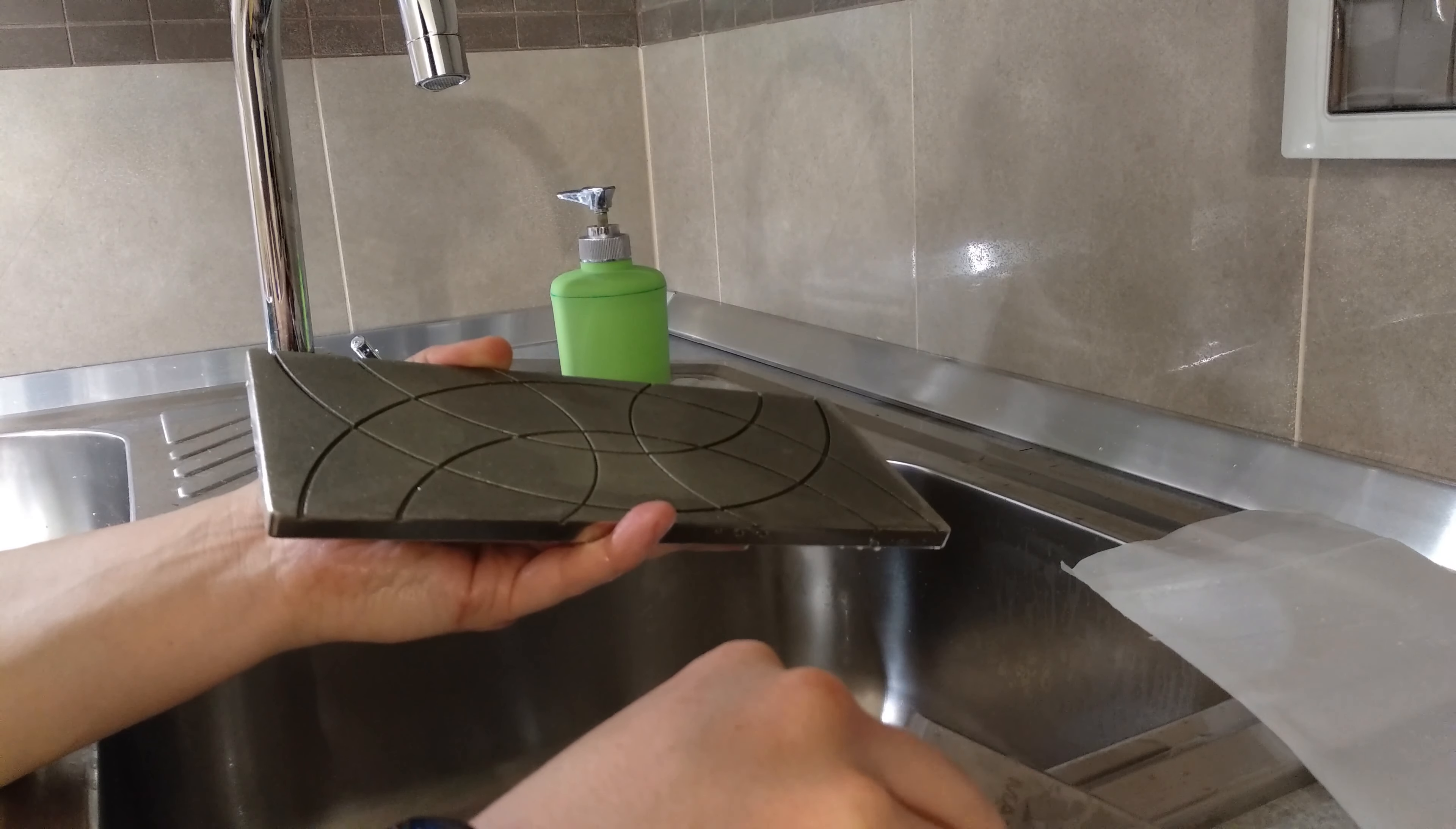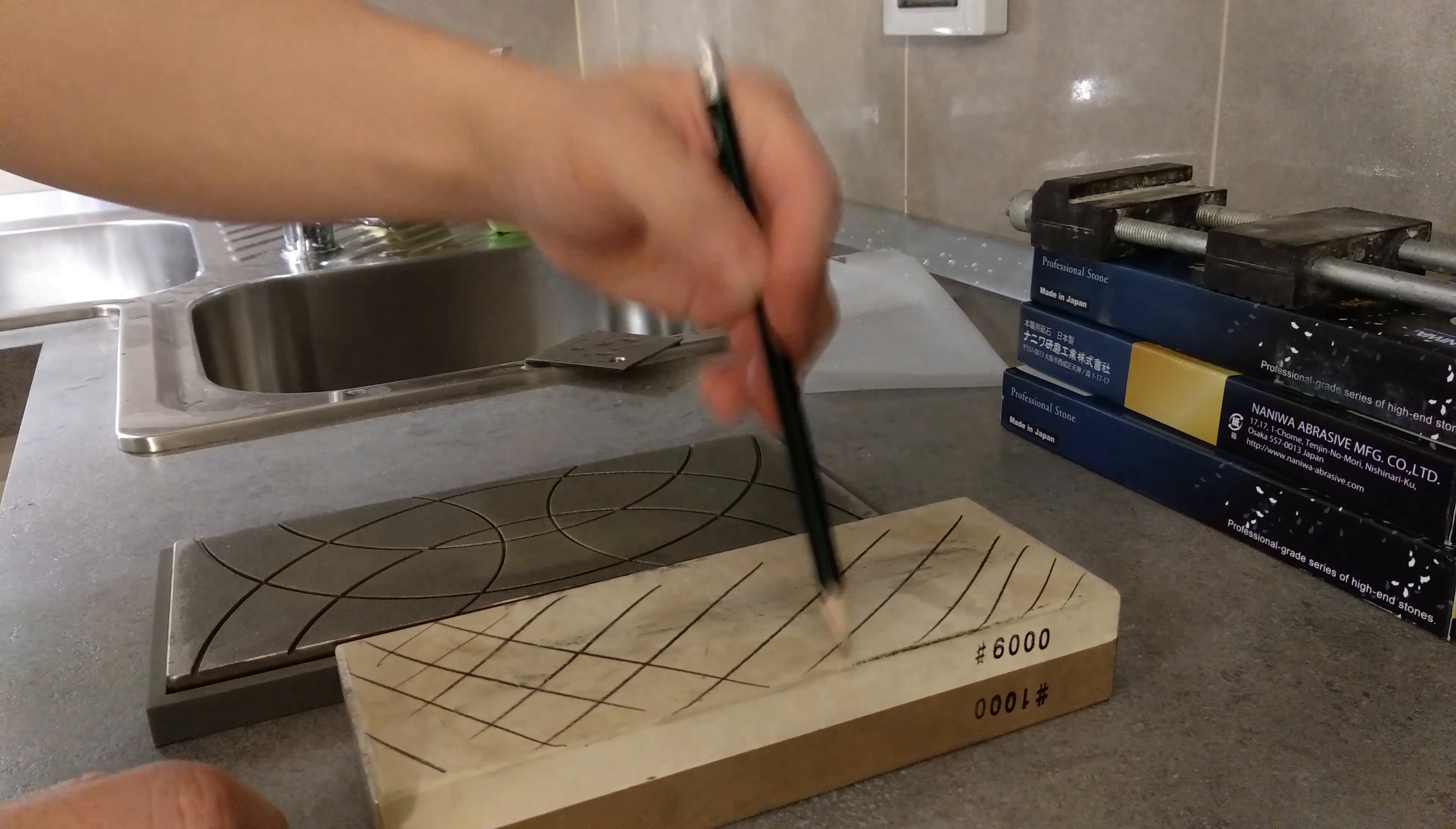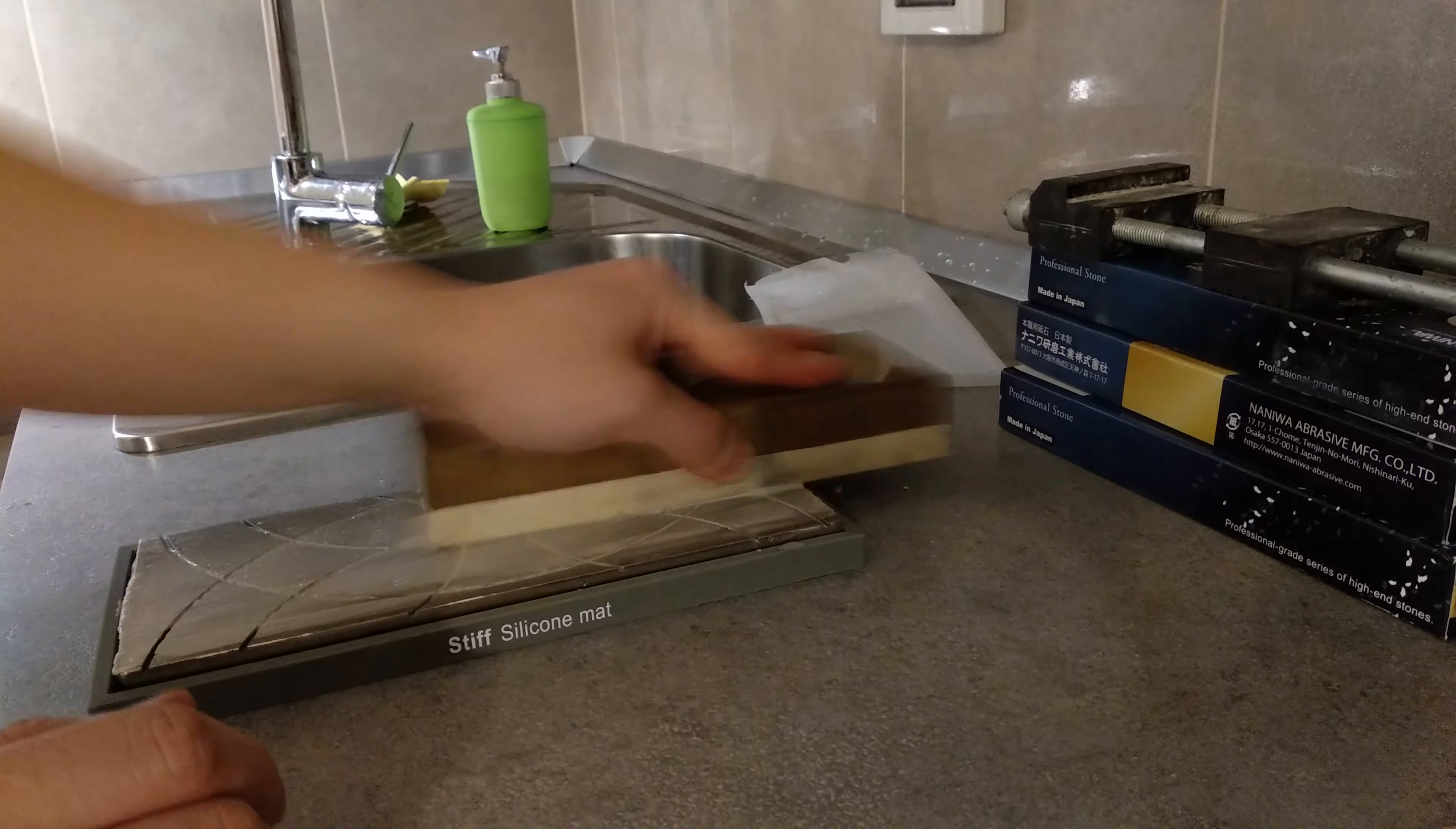That's a ceramic stone. This side is 1000 and this side is 6000. You can see there are still particles left in the stones and this side is pretty dirty. You need to flatten this before you sharpen the knife. Make a grid pattern with your pencil like so, and then just go back and forth. Ceramic stones are quite tough to lap, but with this diamond lapping plate it's really no problem. I just need to wash it from time to time, and of course if you pre-soak your stone it's much easier.